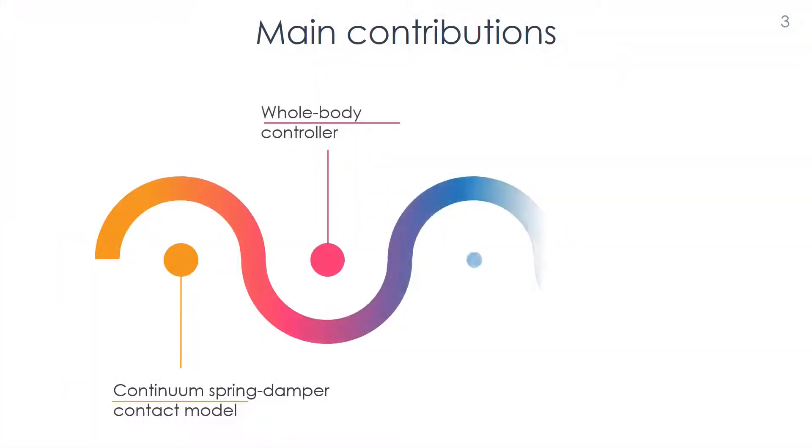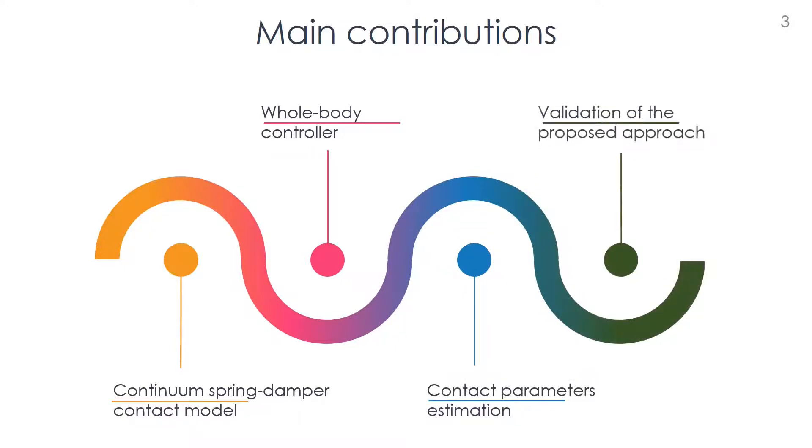The main contributions of the paper are a new contact model that characterizes the stiffness and damping properties of a viscoelastic material that exerts forces and torques on a rigid surface in contact with it, a whole-body controller that allows a humanoid robot to walk on a viscoelastic floor which is modeled using the proposed compliant contact model. The robot controller estimates the model parameters online, so there is no prior knowledge of the contact parameters. A validation of the approach on the simulated torque control humanoid robot iCub.